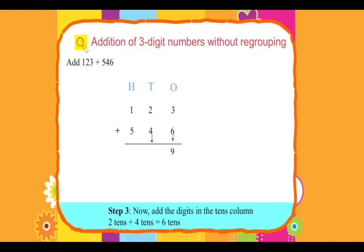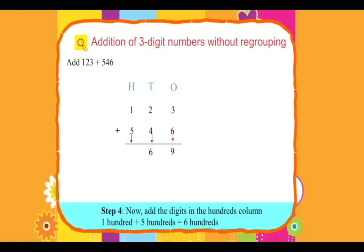Step 3: Add the digit in the tens column. 2 tens plus 4 tens equals 6 tens. Step 4: Add the digit in the hundreds column. 1 hundred plus 5 hundreds equals 6 hundreds. So the answer is 669.